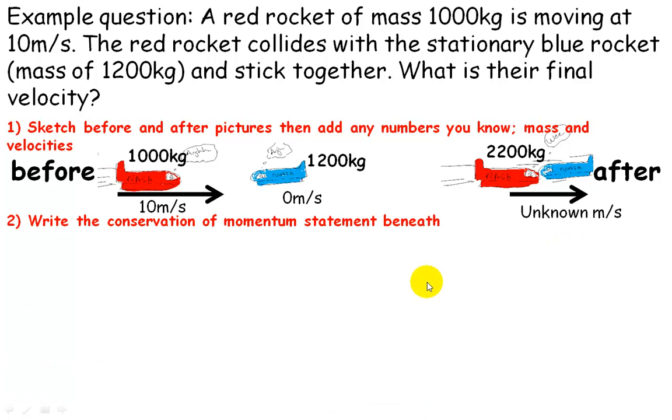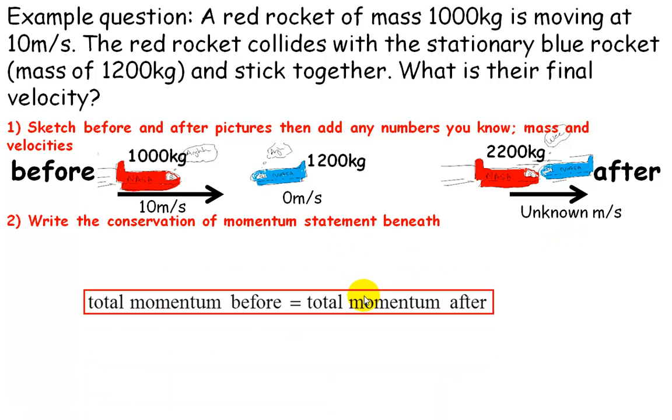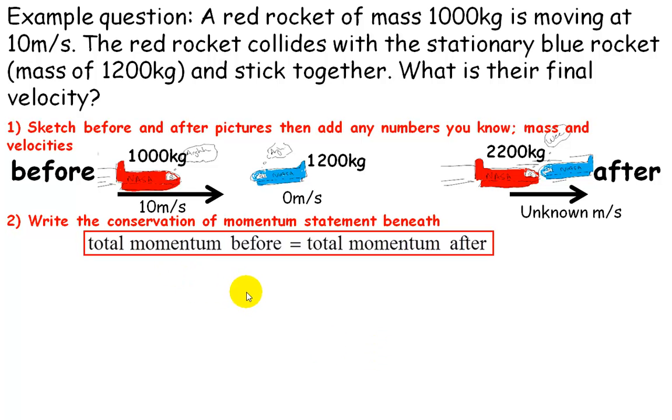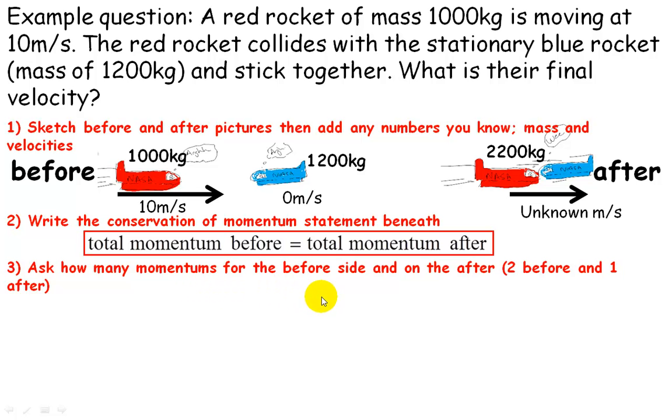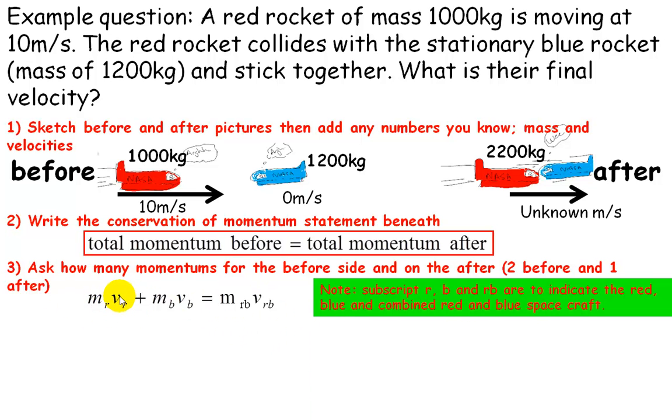Then you can write beneath this the conservation of momentum statement. So total momentum before equals total momentum after. The next step, then, step three, will be to ask yourself how many momentums you have either side or, sorry, before and after. Because there are two separate objects before and they combine after, I've got two momentums to consider before and one momentum to consider after, and that's what is shown here. I've just used letters to represent mass and velocity for each of the objects. I've also put a subscript in, so little r is representing the red object, little b is representing the blue object, and r v is representing the combined object at the end.